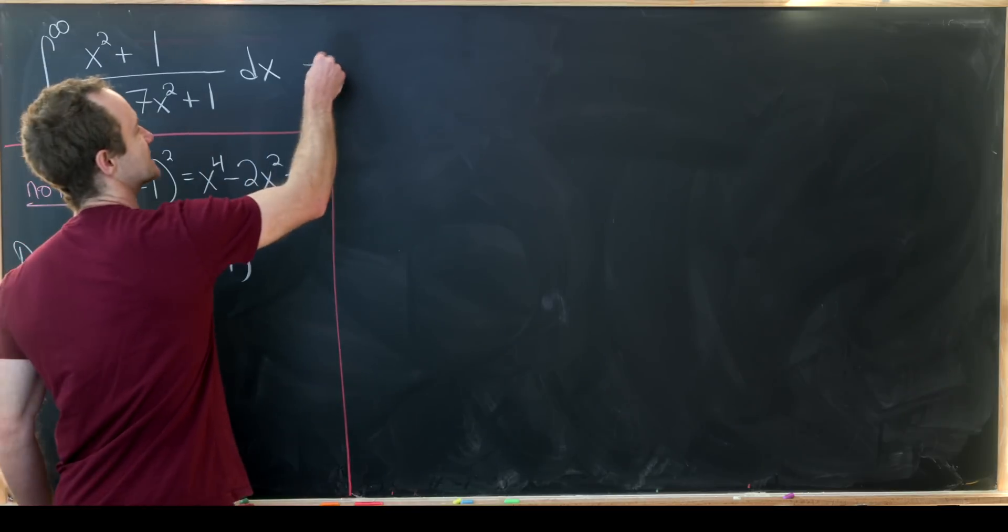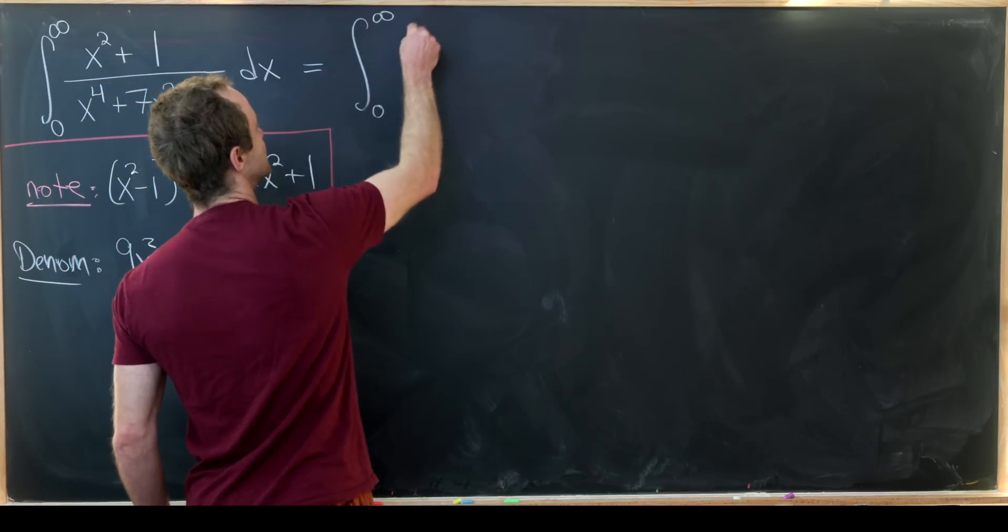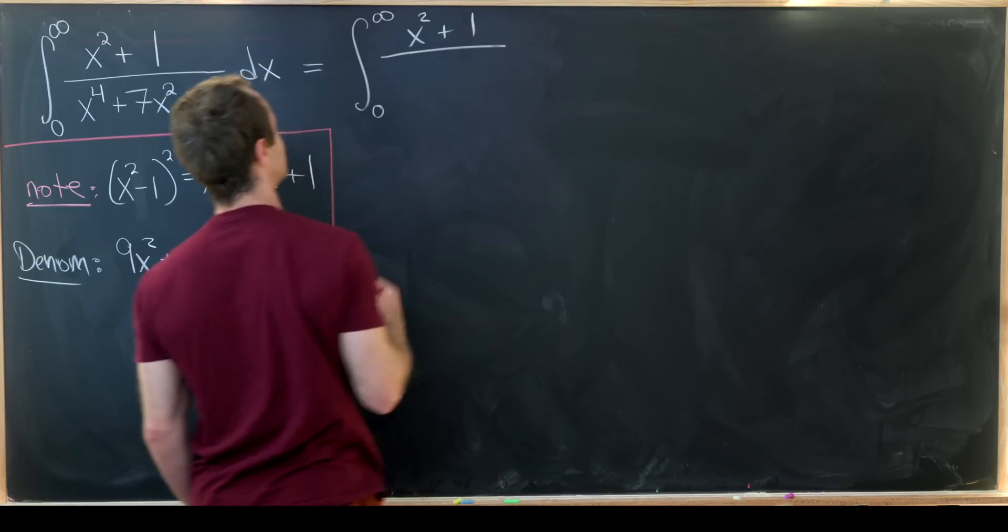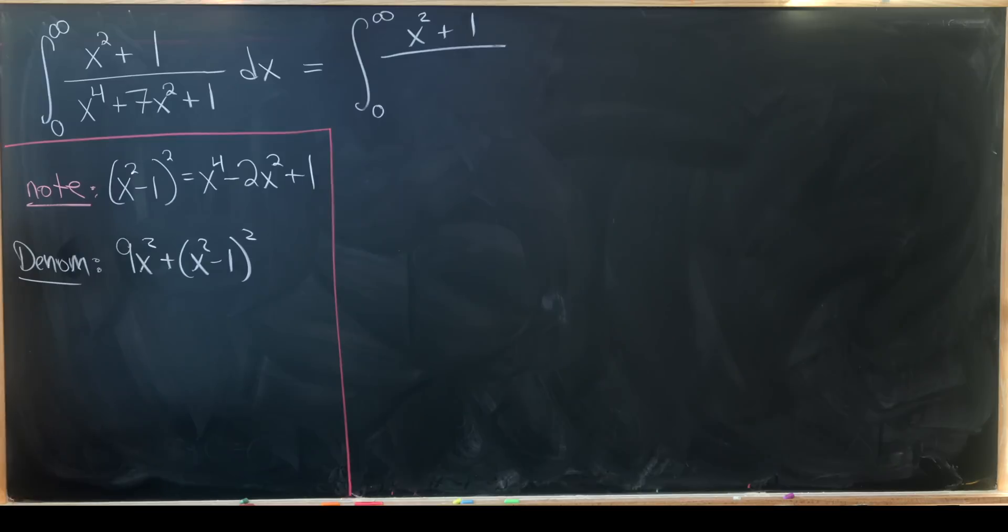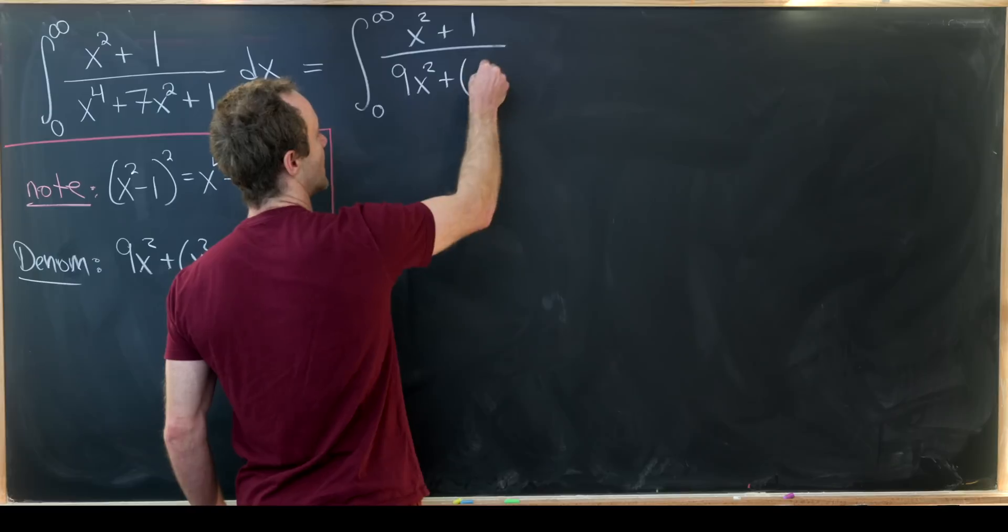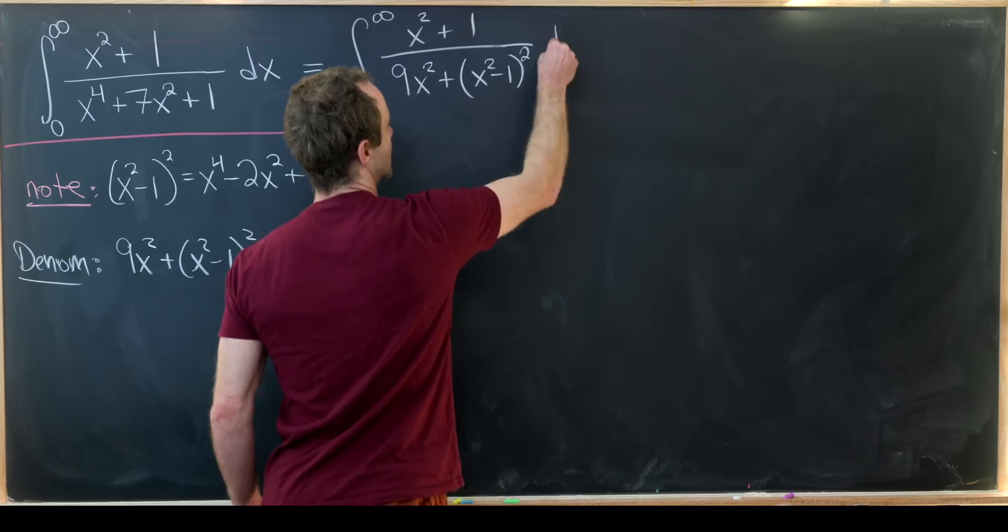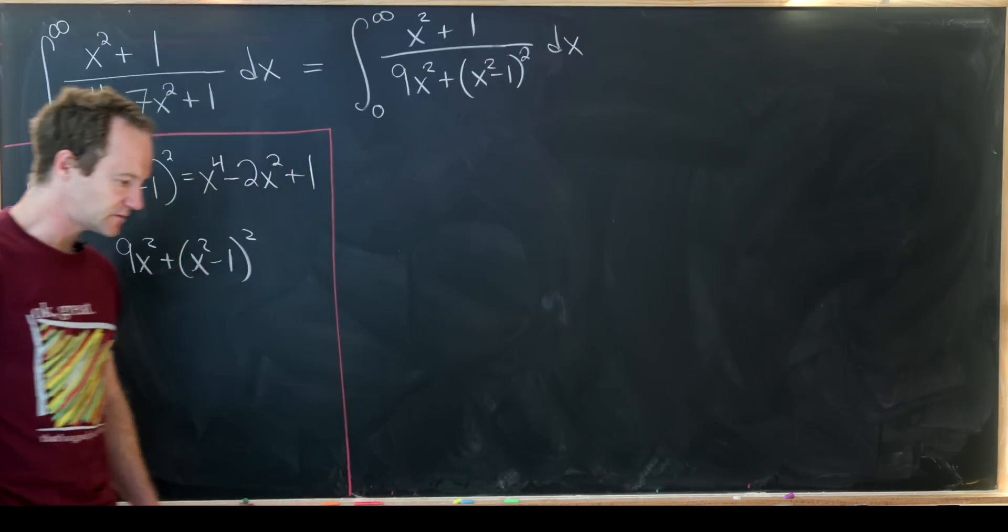That means I can take my integral and rewrite it with this observation. So I have the integral from 0 to infinity of x squared plus 1 in the numerator, and in the denominator I have 9x squared plus x squared minus 1 quantity squared dx.